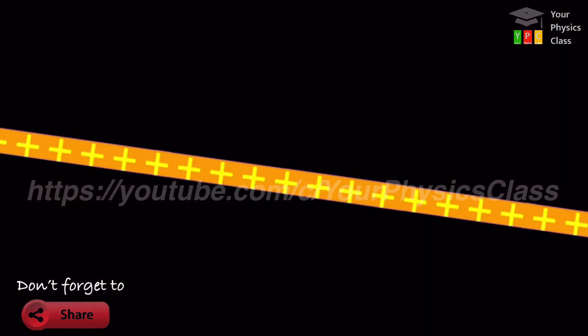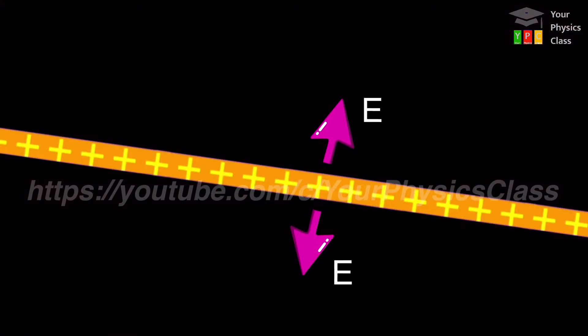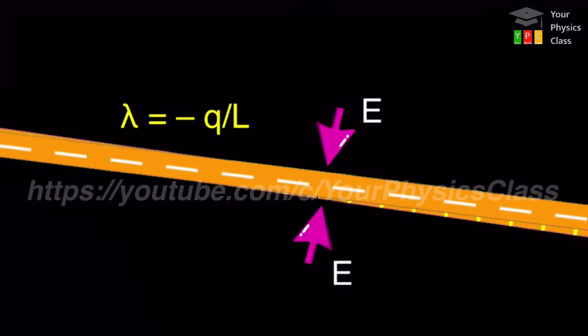The direction of electric field is directed outward if lambda is positive and is inward when lambda is negative.